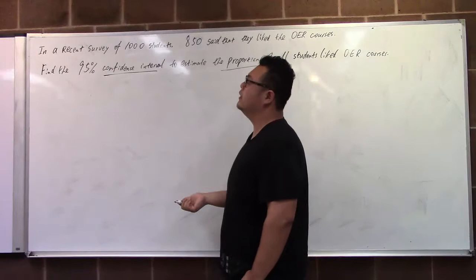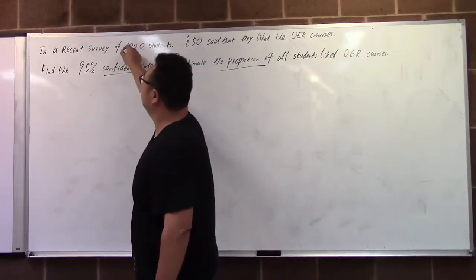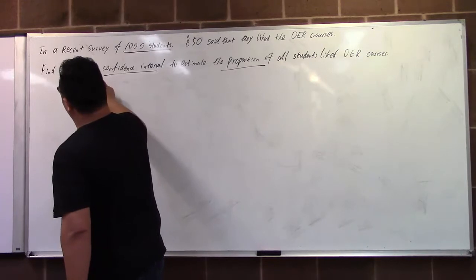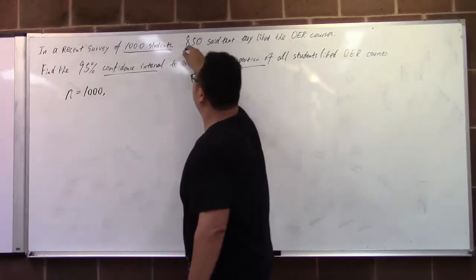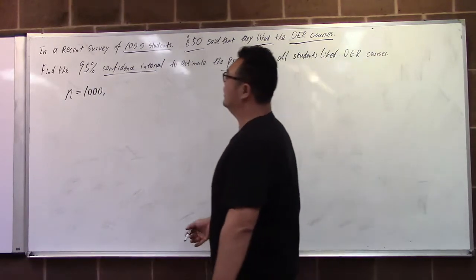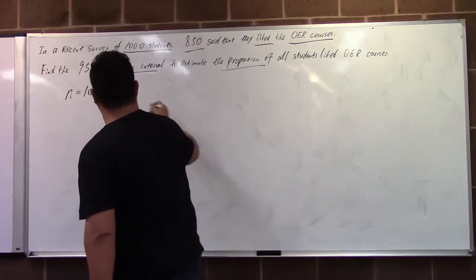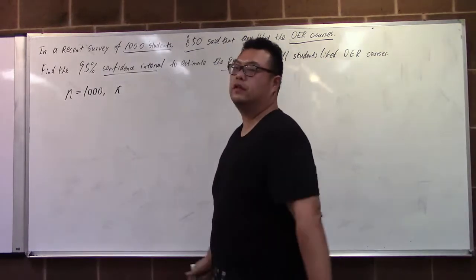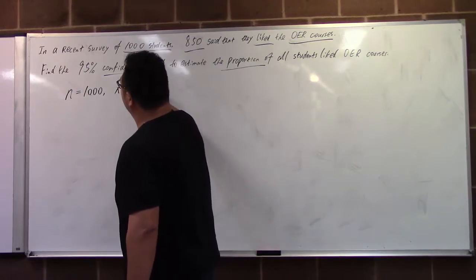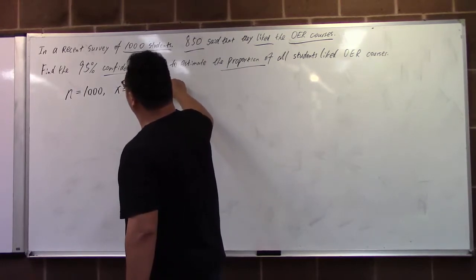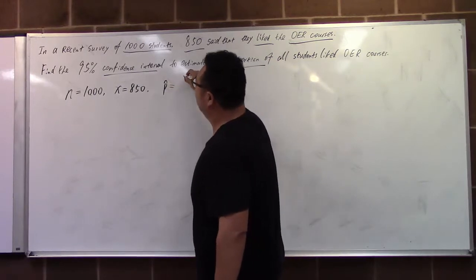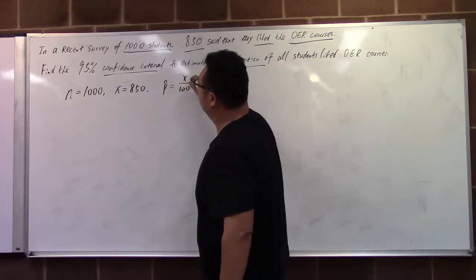We need the sample proportion based on the question. They surveyed 1,000 students — that's our n — and 850 said they liked the OER courses, that's our x. We need to find the proportion for all students who like OER courses, therefore x is 850, and we are able to get the sample proportion.